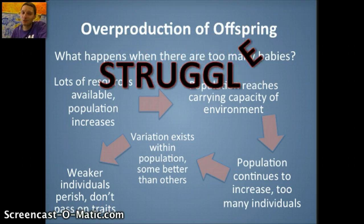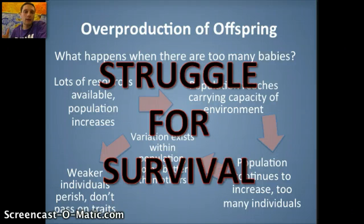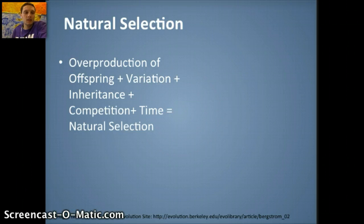All of this boils down to the struggle for survival. Life is not very easy for most species. There's a struggle for survival through competition for resources, and because there's an overproduction of offspring, there's competition. Those that have traits that are better fit — meaning traits that help them survive in their environment — are going to survive to reproduce and pass on those alleles and genes to their offspring. So it's overproduction of offspring, variation, inheritance, competition, and time that results in natural selection.